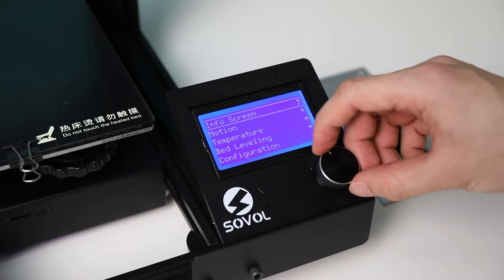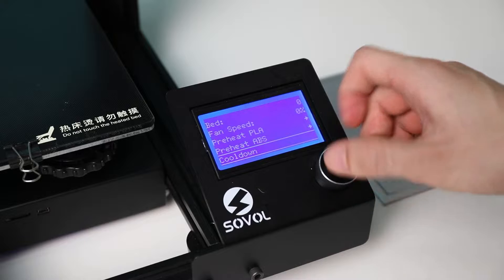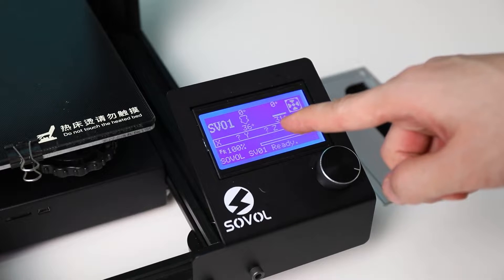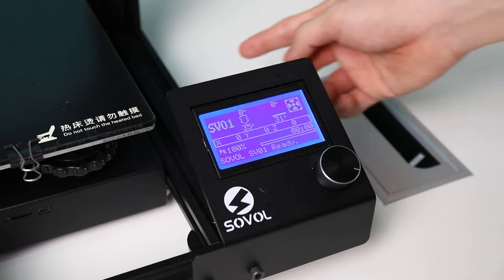Let's go ahead and cool down the nozzle. When it reaches a safe temperature like 36 degrees Celsius, we can turn off the machine.